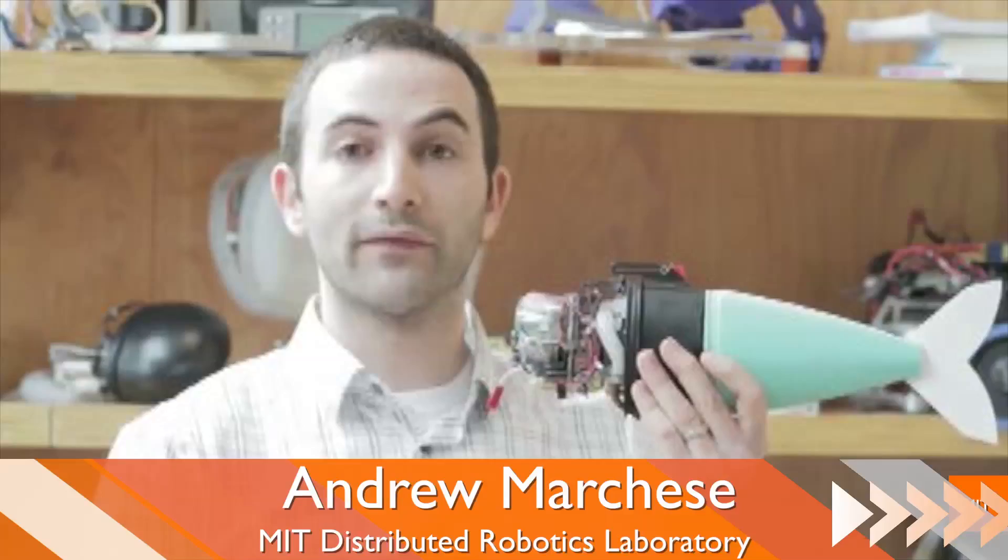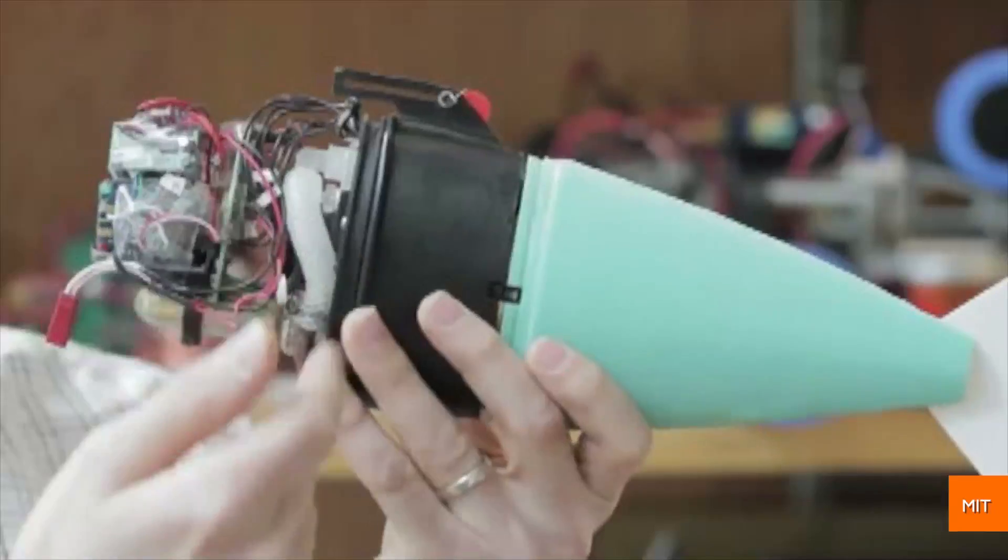Now researchers at MIT say they've built the first soft robot that can swim like a fish. It stores fluid on board in the form of a gas and then releases this gas through a series of pipes. By inflating and uninflating different parts of the body, we can get it to undulate.